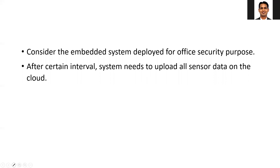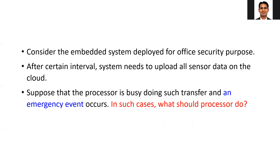To begin with, let's start with a simple example of an embedded system deployed for office security purposes. Assume that you have an embedded system with different cameras, different kinds of sensors — fire sensors, temperature sensors — which send data to the processor. The processor needs to upload this data at a regular interval to some cloud, and it is doing all the data uploading by itself without the use of DMA.